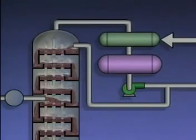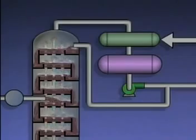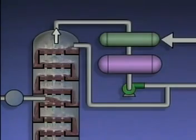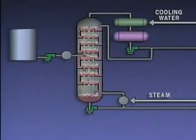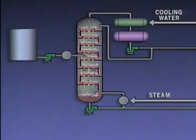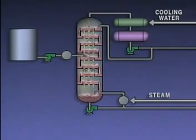Meanwhile, the top of the tower is still hot enough to keep the lighter fractions in vapor form. The vapors are drawn off the top of the tower and into the condenser. Refluxing increases the purity of the overhead product because condensing the vapors made of heavier fractions keeps them out of the stream of vapors that leaves the top of the tower.